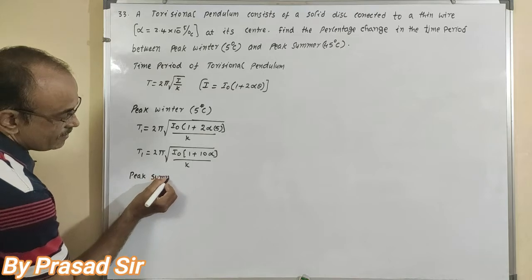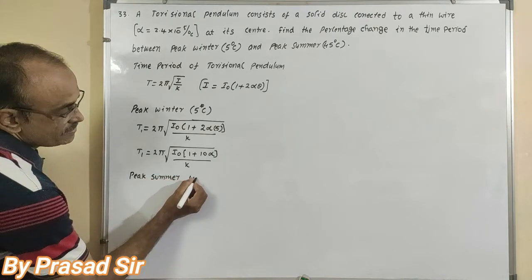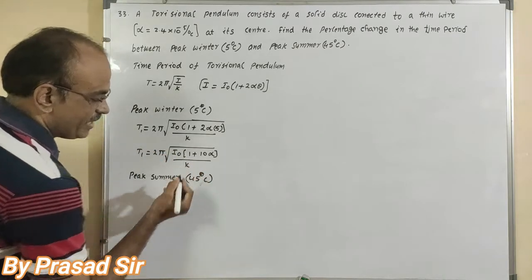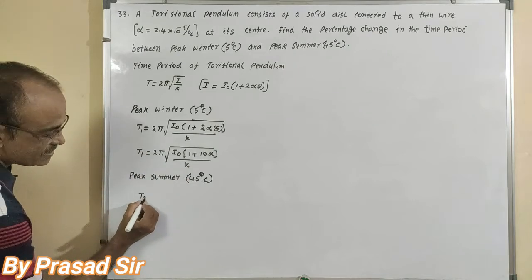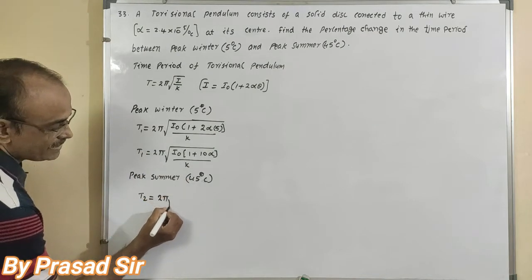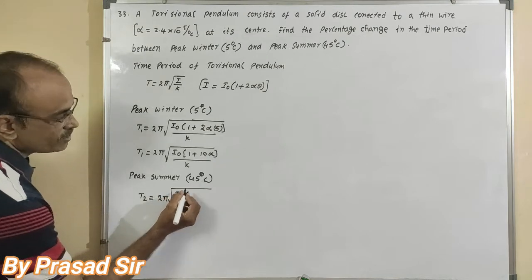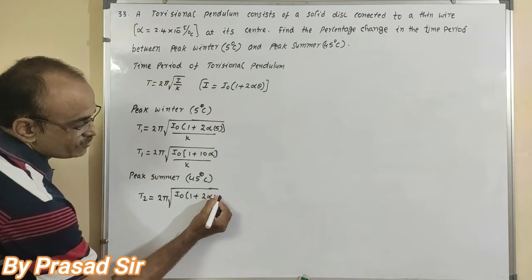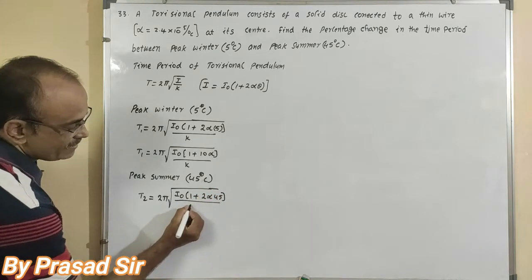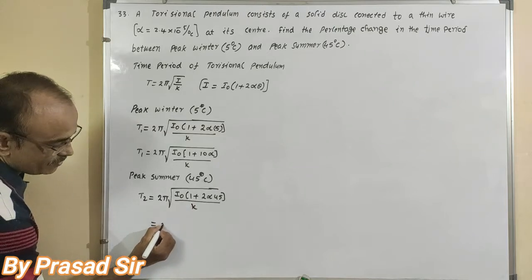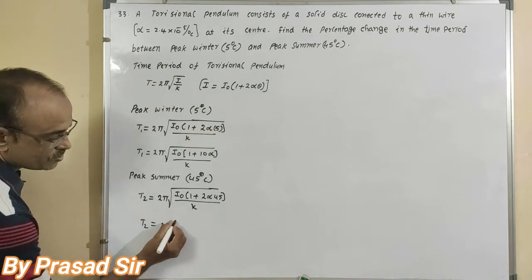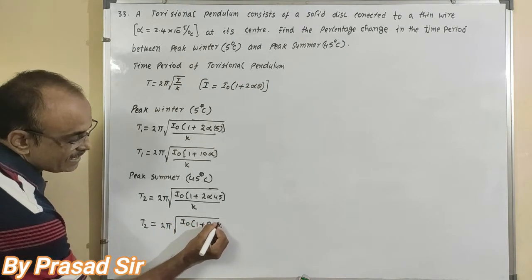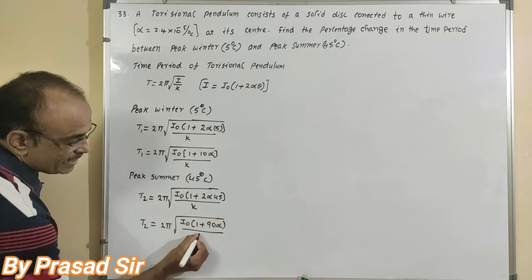T2 is equal to 2 pi times square root over I naught times 1 plus 2 into alpha into 45, divided by k. So T2 is equal to 2 pi times square root over I naught times 1 plus 90 alpha, divided by k.